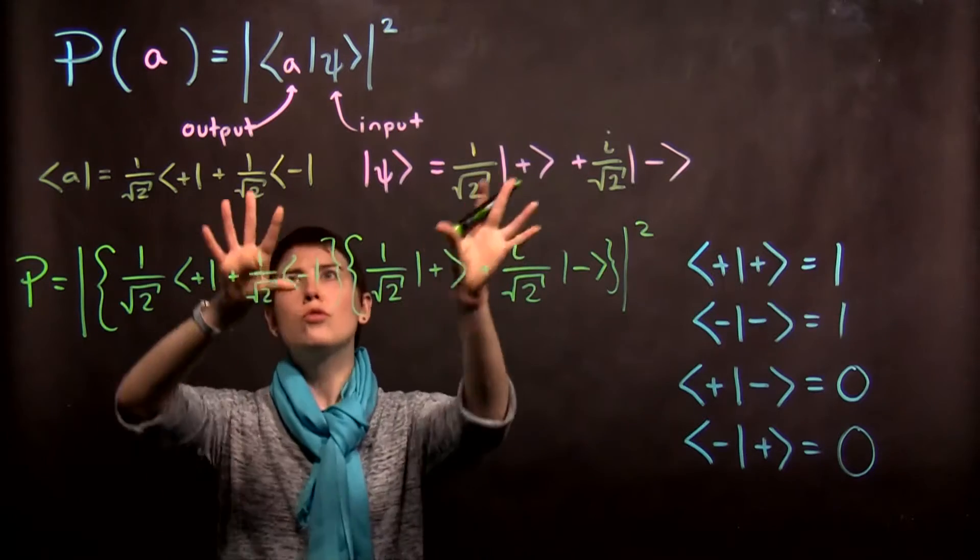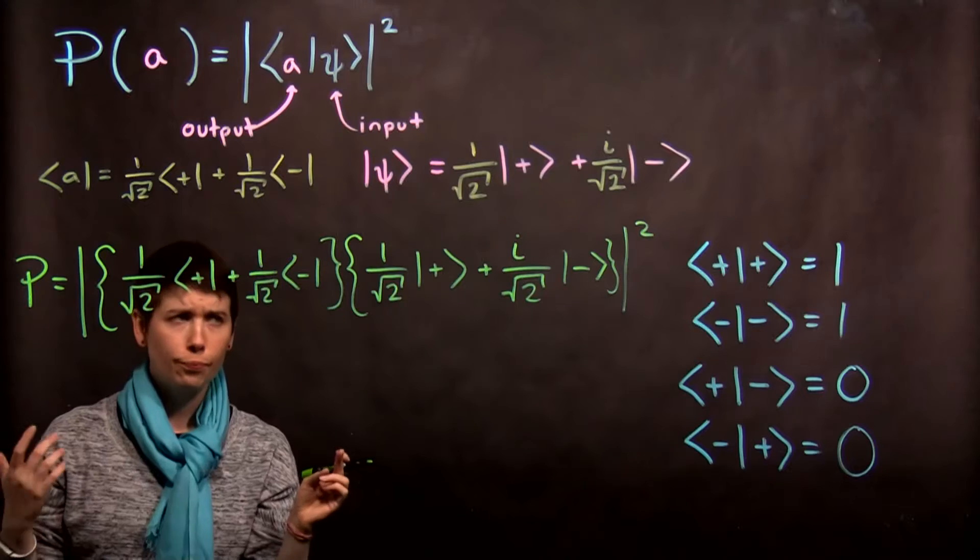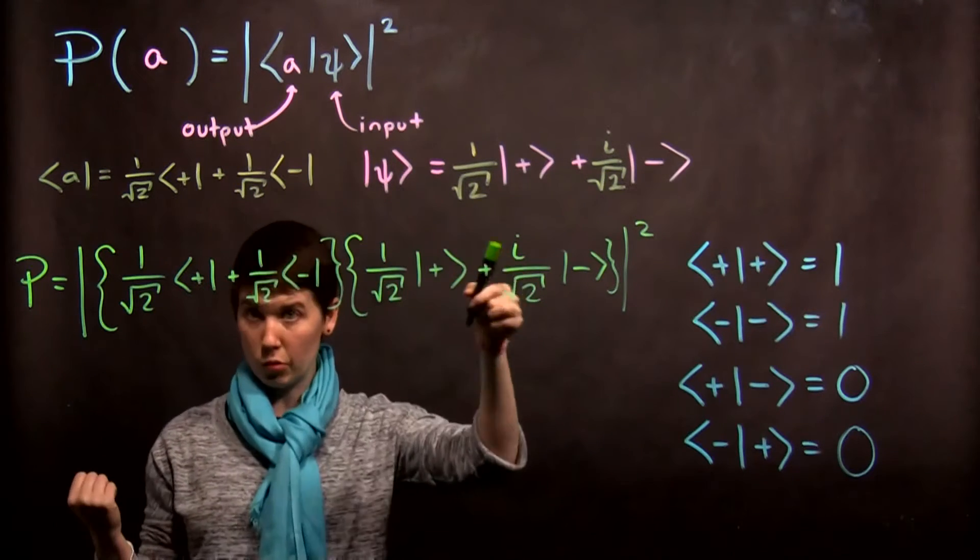Now if you wanted to, you could factor out that one over square root of two. That's fine. But be careful to not lose the i. You can't factor out an i. There's only one i here.